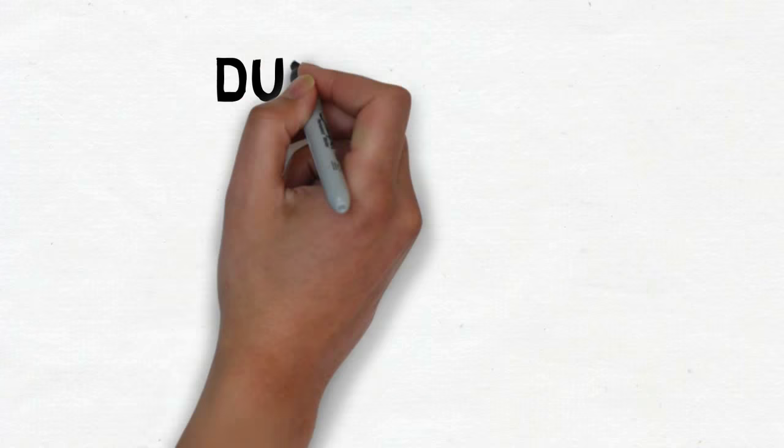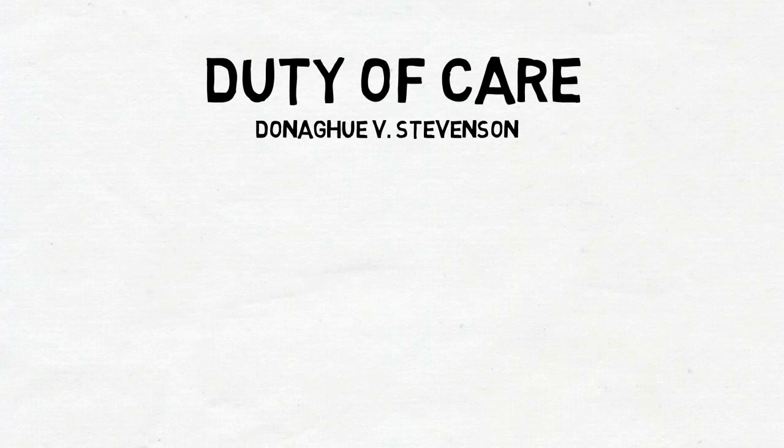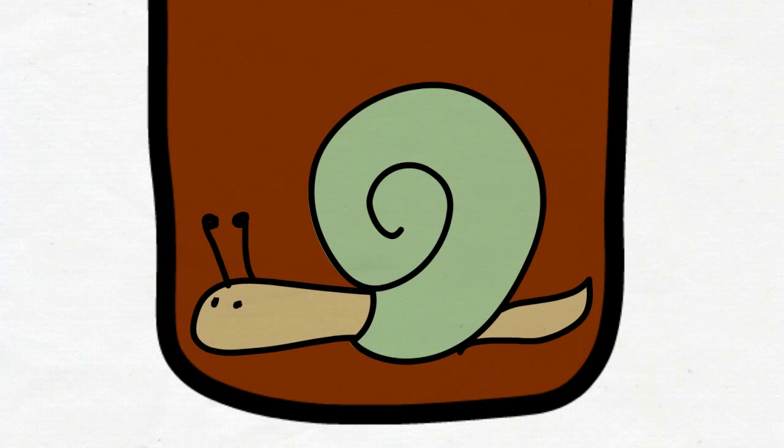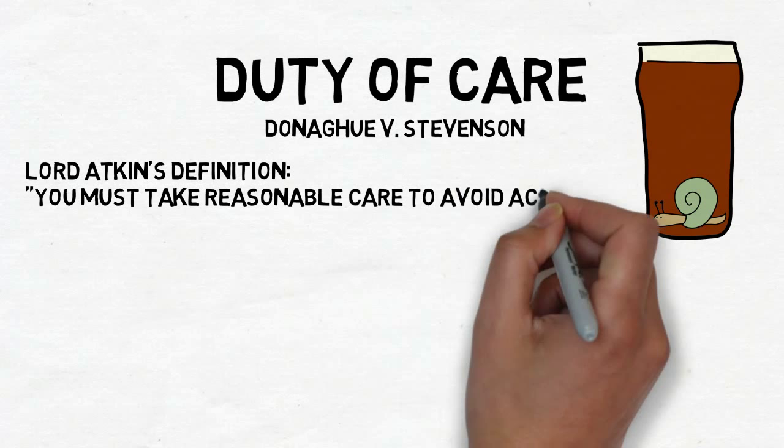The first element is duty of care. The famous case for this is Donoghue v. Stevenson. In this case, Mrs. Donoghue was enjoying a ginger beer when she found a snail at the bottom of her bottle. She held Mr. Stevenson, the manufacturer, liable because he owed her a duty of care. Lord Atkins' definition states that you must take reasonable care to avoid acts or omissions which you can reasonably foresee would be likely to injure your neighbor.